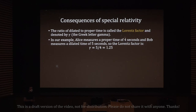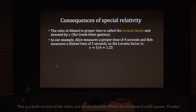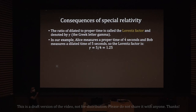The ratio of dilated to proper time is called the Lorentz factor, denoted by the Greek letter gamma. In our example, Alice measures the proper time of four seconds and Bob measures a dilated time of five seconds, so the Lorentz factor is five divided by four, which is 1.25. Essentially, time gets dilated by 25%.